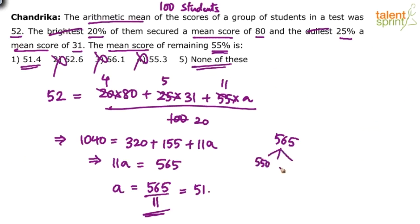For me 565 is not 565, for me 565 is 550 plus 11 plus 4. So 550 by 11 is 50, that is the first part of the result. 11 by 11 is 1, second part of the result.